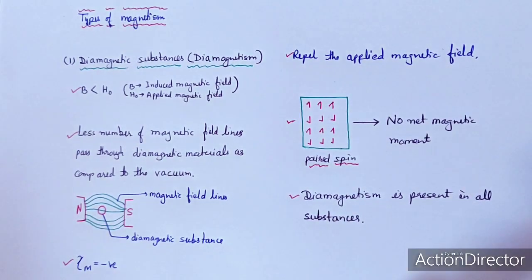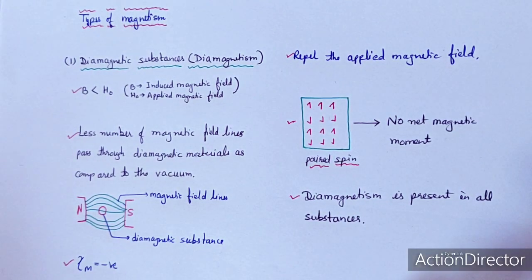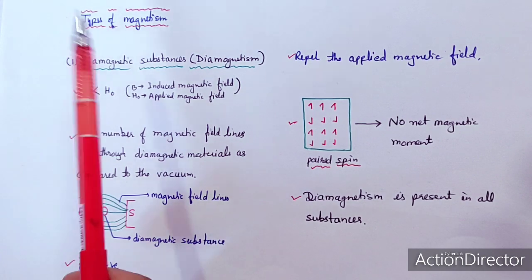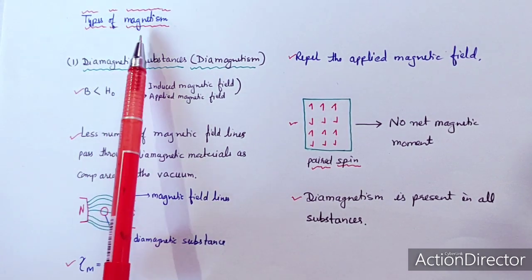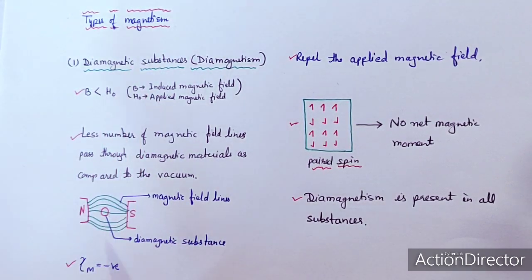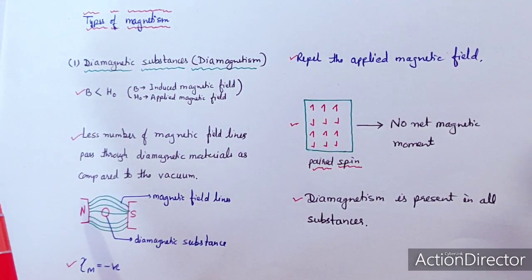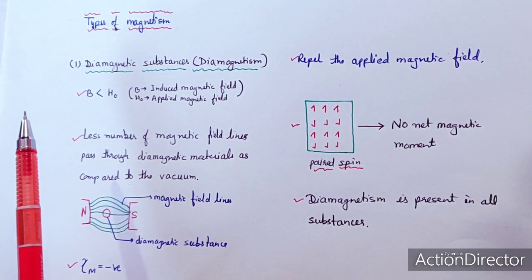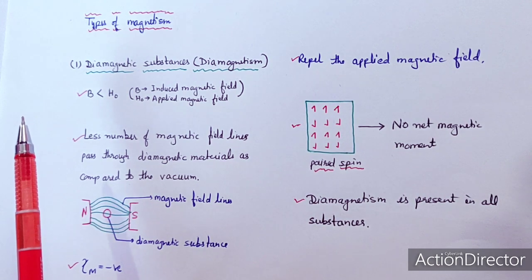Dear students, in this lecture we will discuss about the types of magnetism, or the types of magnetic substances.